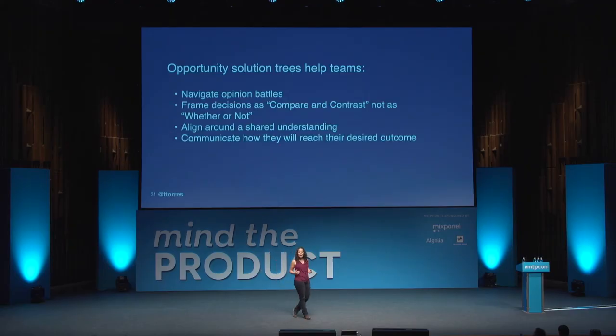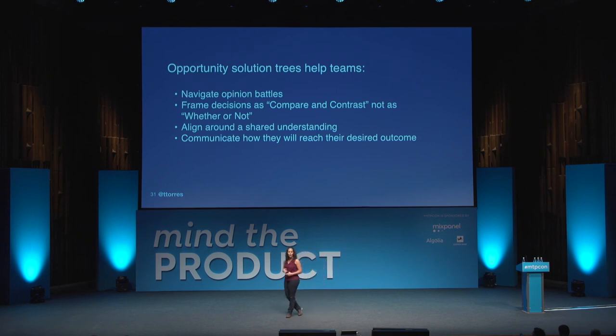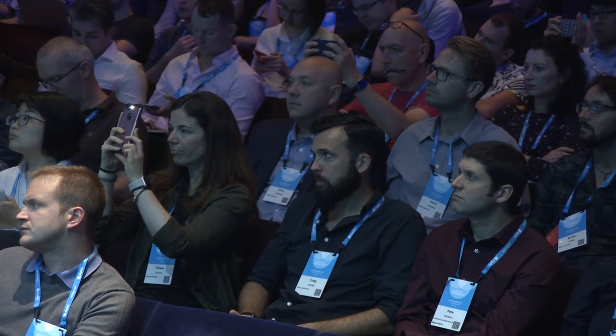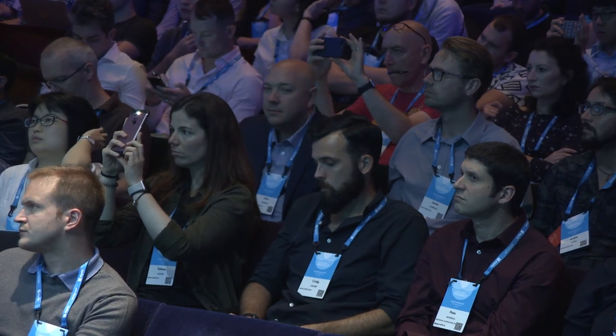Finally, it helps teams communicate to their leaders how they're going to reach their desired outcome. Most of us aren't just trusted to reach our goal — we have a boss who says, how are you going to do it? So we can replace certain roadmaps with features and dates with the opportunity solution tree: these are the opportunities I'm hearing about, these are the solutions I'm considering, these are the experiments I'm running — I don't know the answer, but I have all these paths to explore.